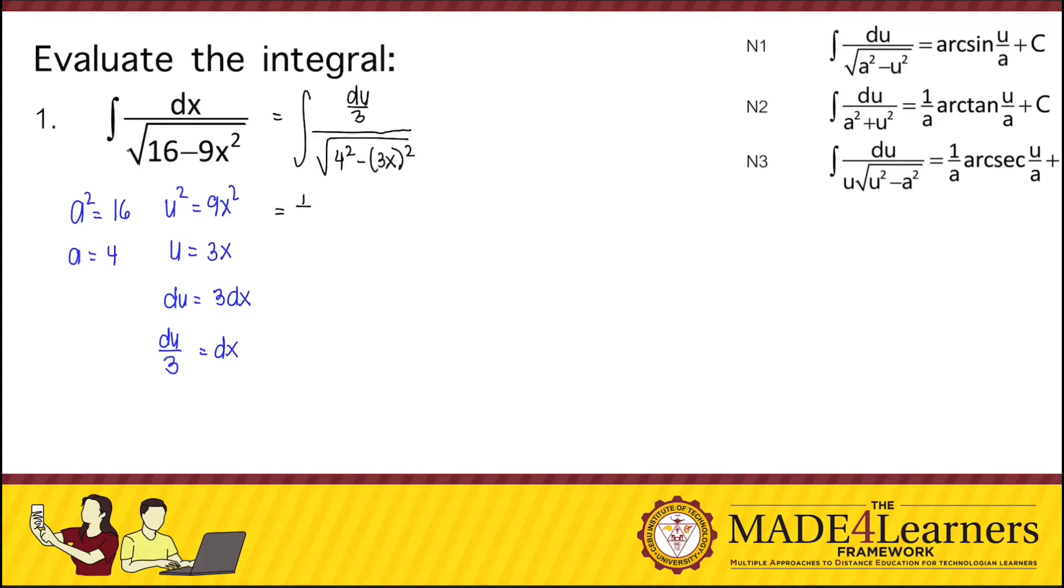So we put the constant outside, that's 1 third du over the square root of 4 squared minus u squared. So it looks exactly like n1 now. Now we can integrate using the formula.